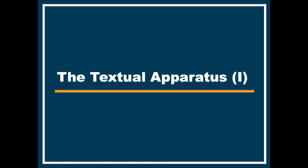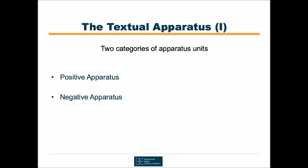Not to mention the different appendices with their beautiful Latin names. Even experts are often unfamiliar with them. Let us first talk about the textual apparatus. There are two categories of apparatus units: positive and negative apparatus.